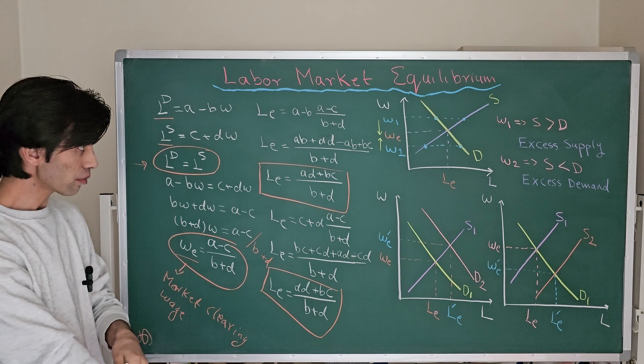This is the equilibrium quantity of labor and W_E is the market clearing wage. Graphically, market equilibrium is the state where the labor supply curve crosses the labor demand curve. Recall that the labor demand curve shows how many workers employers are willing to hire at each wage level, and the labor supply curve shows how many laborers are willing to enter the labor market at each wage rate.